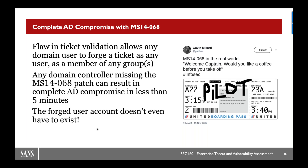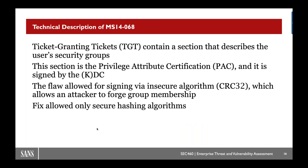Let's talk about actual vulnerabilities as opposed to protocol nuances. For example, MS14-068. In my opinion, this is the worst vulnerability to have ever affected Windows environments, period. It doesn't really get a lot of coverage. This vulnerability is also interesting insofar as it's the only privilege escalation vulnerability that Microsoft has ever rated critical in the history of the company. MS14-068 is a privilege escalation vulnerability across the domain itself. It allows you to go from any domain user with a valid TGT to become any other domain user, where your new TGT as that other domain user is still valid.